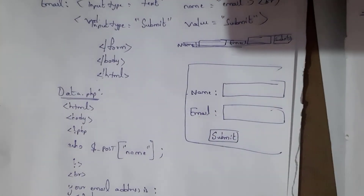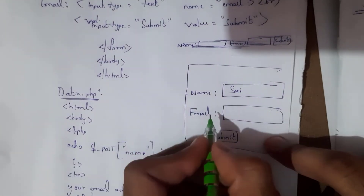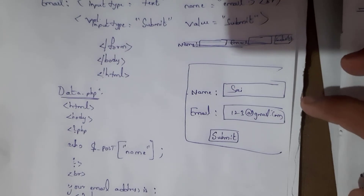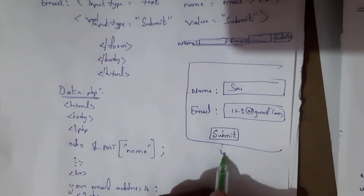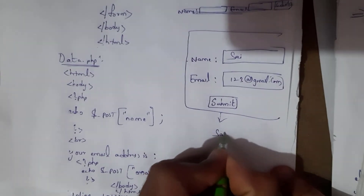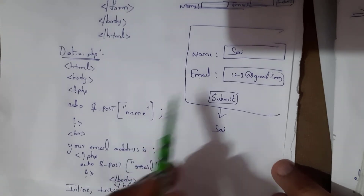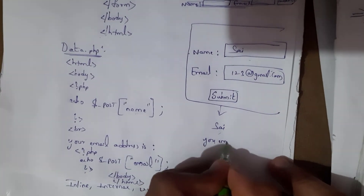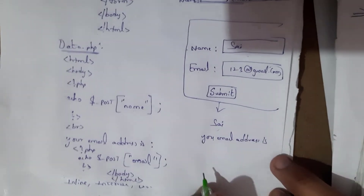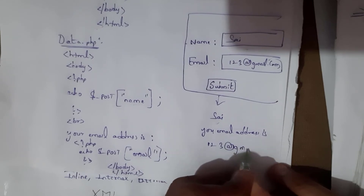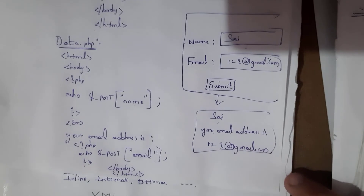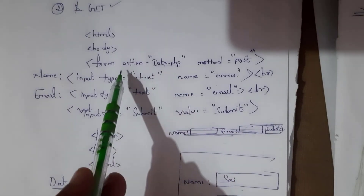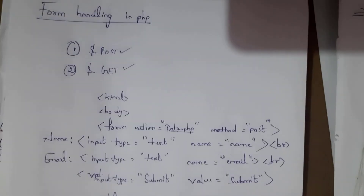Here I have entered the username as 'sai' and email as '123@gmail.com'. Once I enter the username and email address and click submit, the output is generated. The name I entered was 'sai', so the output displays 'sai' and then 'your email address is 123@gmail.com'. This is how the output looks after clicking submit. We link the data.php file in the form action to achieve this.